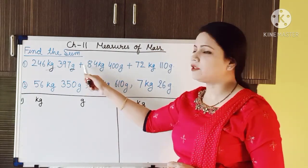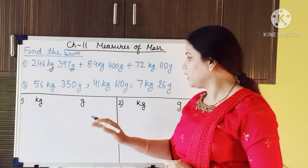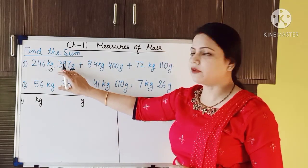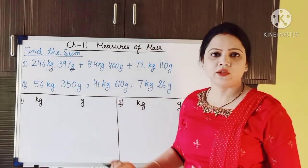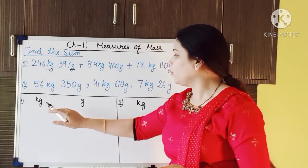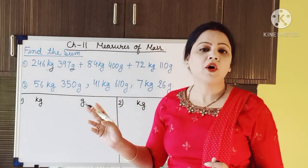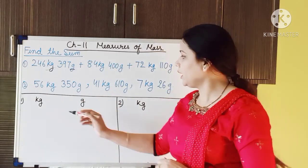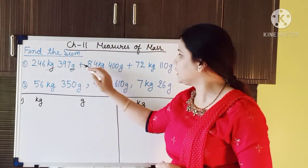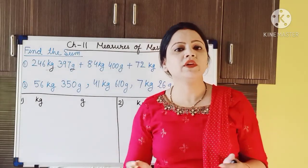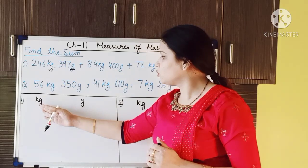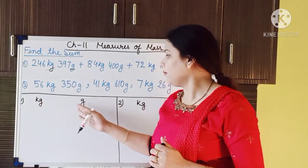As you can see here I have written two questions. I have separated both into two parts. I am going to solve the first question on this side and the second question on the other side. Just as we did in the measurement of length, we have to make two separate columns for different units. Here I have made kg and g columns. The first number has kg and g, so the two different metric units are kilogram and gram. So I have made two columns: kilogram and gram.